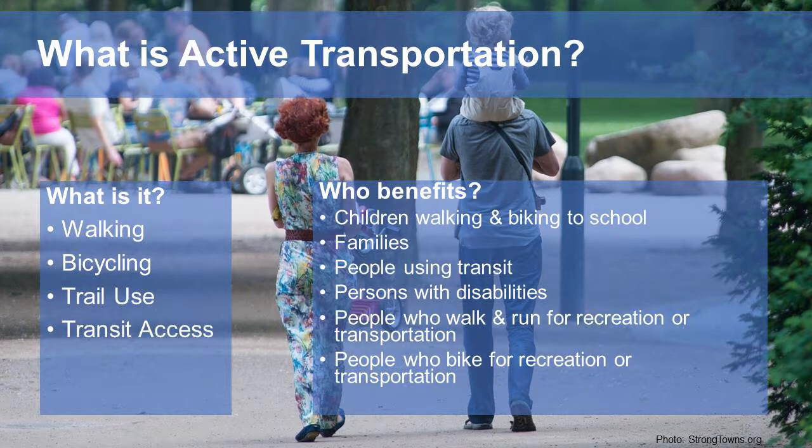Before going into the specifics of the planning process, what is active transportation? It's walking, biking, trail use, and transit access — and that includes wheelchair users and people with other mobility assistance devices. Who does it benefit? It benefits really broadly the community — everybody. Anyone with children biking or walking to school, families, people trying to get to transit stations, people with disabilities who need curb cuts and smooth pavement and sidewalks, people who walk and run for transportation or recreation, and people who bike.